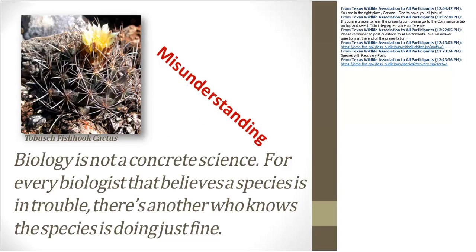Biology is not a concrete science, and biologists may have different interpretations of a species' status. That's why the Endangered Species Act process includes opportunities for people to provide different viewpoints — the listing process provides public commenting periods several times, including a 60-day public commenting period when a listing rule is proposed on the Federal Register. Keep in mind, listing decisions are based on best available science. By working with researchers and state natural resource agencies to allow population surveys and providing permission for location-specific data to be collected from private property, you, the landowner, can contribute to better informed listing and delisting decisions.